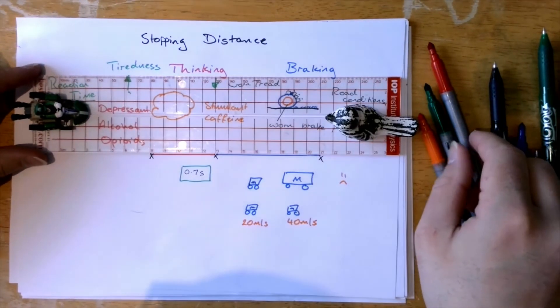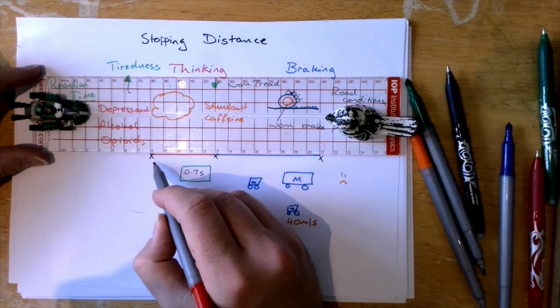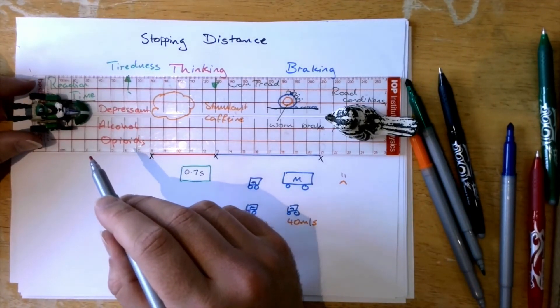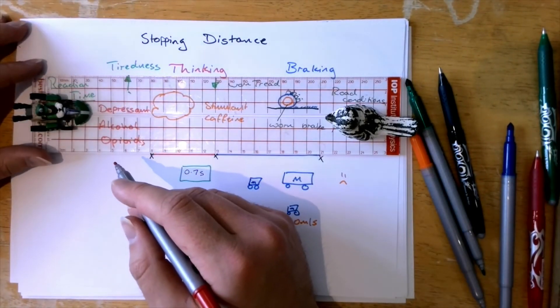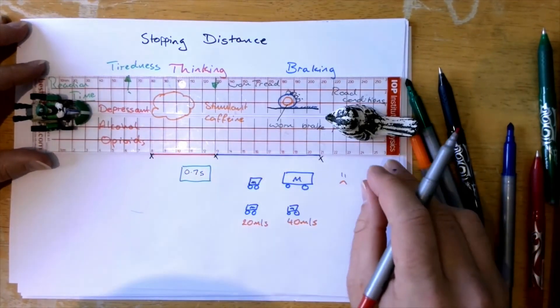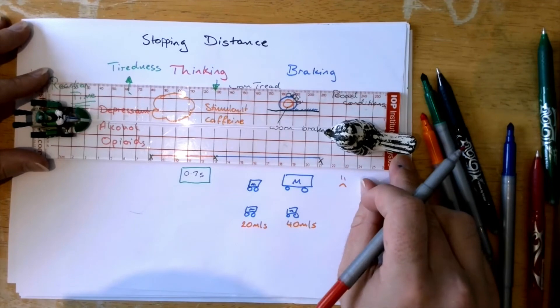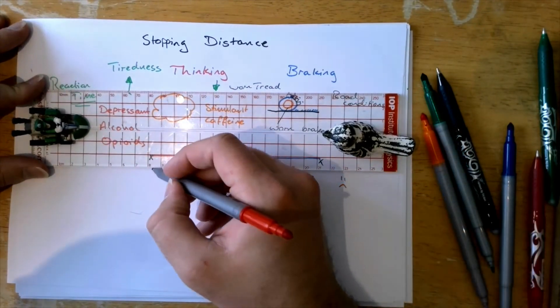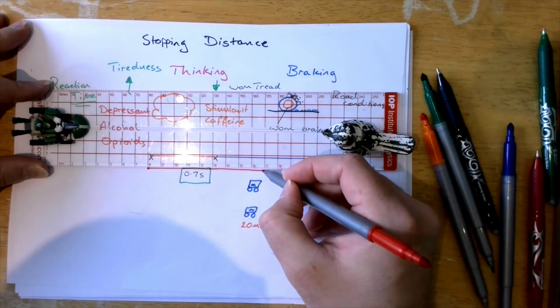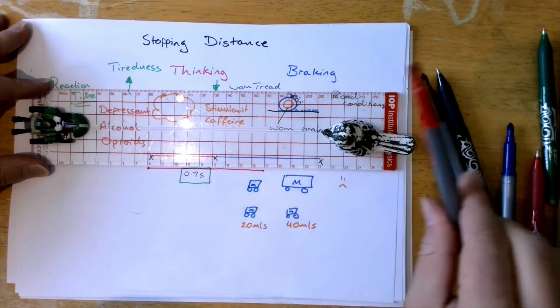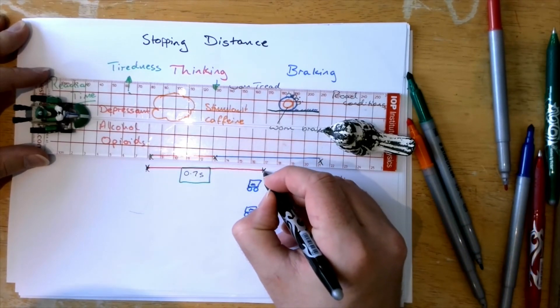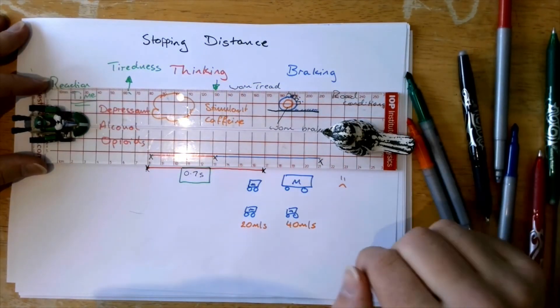Now let us imagine that instead of having a thinking distance that it's this long. This little car driver has instead taken and has had four pints of beer. So he's got a depressant in the system. That means that the thinking distance is going to increase. Now the braking distance will stay the same. The braking distance will stay the same because the car is still in the same conditions and nothing else has changed.